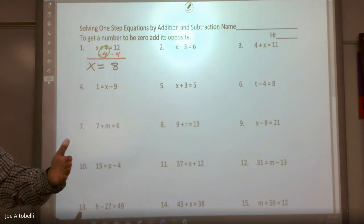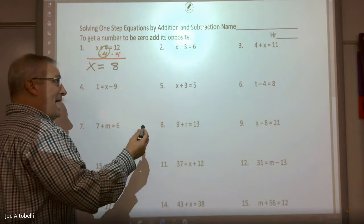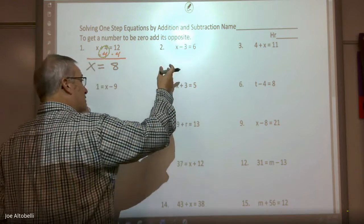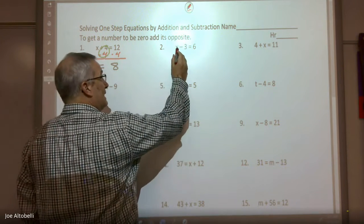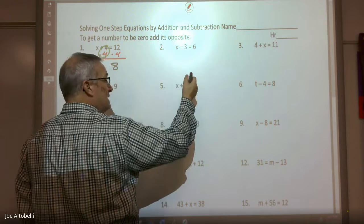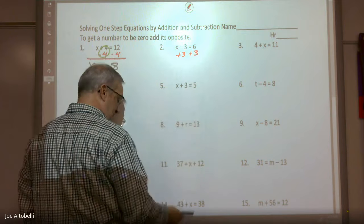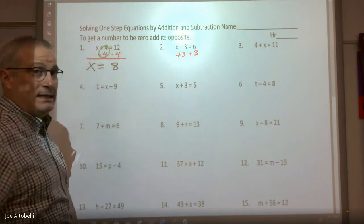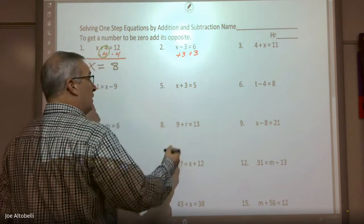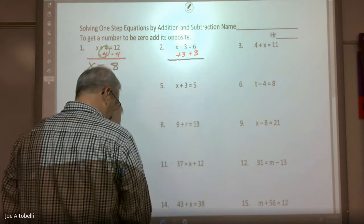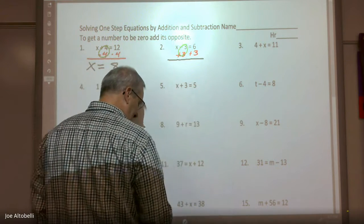Number two, what do you think I'm going to add so I have just x on the left side? To get a -3 to be zero, I'm going to add 3. What I do to one side of the equation, I have to do to the other side of the equation. This will zero out here. That's the whole point of me doing it.